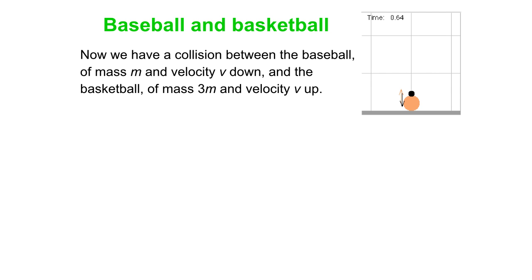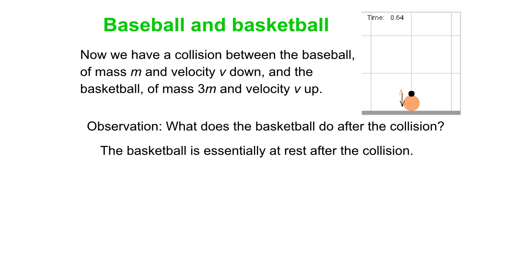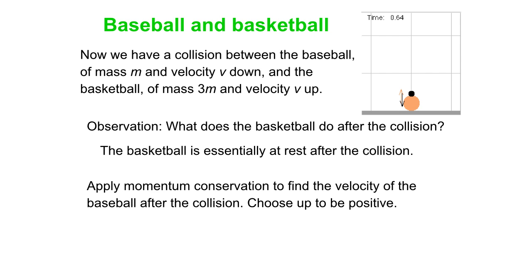Now we have this collision: the basketball of mass 3m velocity v up, colliding with the baseball of mass m and velocity v down. If you look at this collision, when you do this for yourself, you'll see the basketball actually stopped dead afterwards, so the baseball acquires all the velocity. If we apply momentum conservation, you can show that the baseball's velocity is 2v, twice as much as it had before the collision. That also happens to conserve kinetic energy.